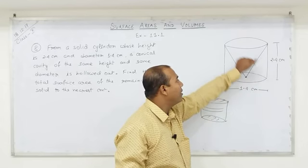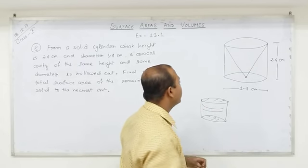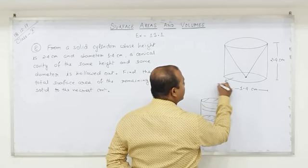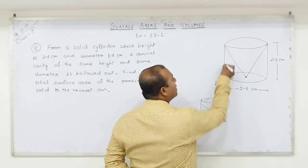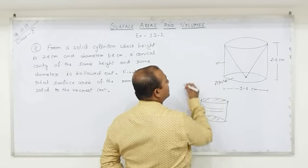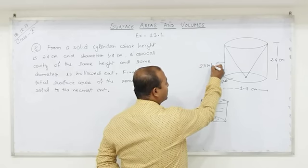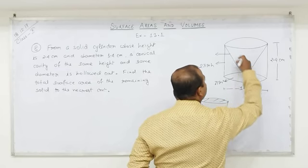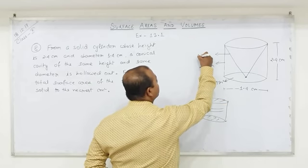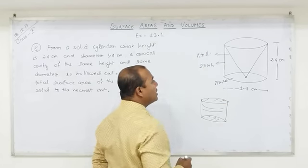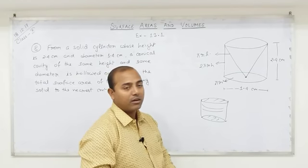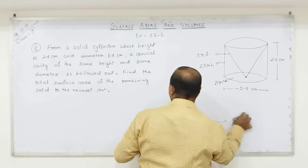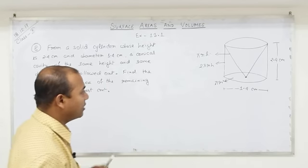If we have the base area, then the formula is πr². The cylinder curved surface area formula is 2πrh. And the conical cavity curve surface area formula is πrl, because the cone curved surface area uses that formula. Using these three formulae, we get the total surface area.